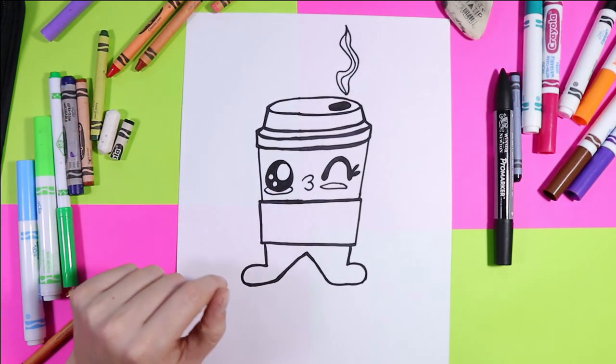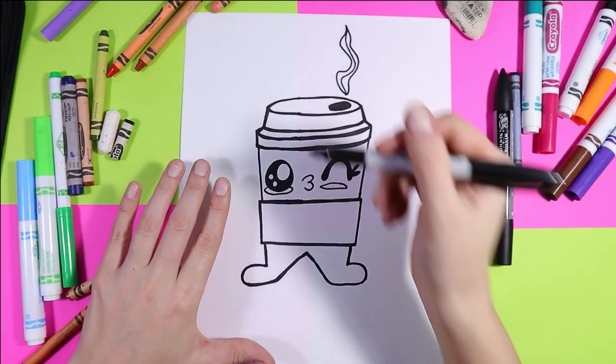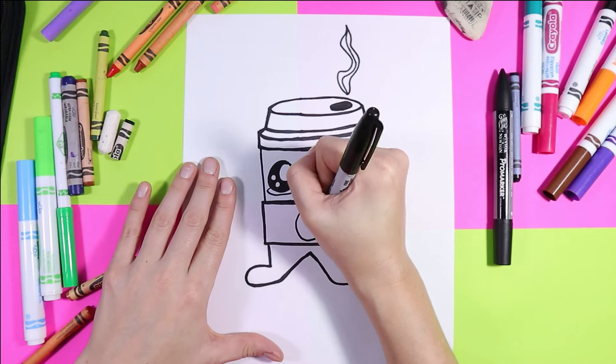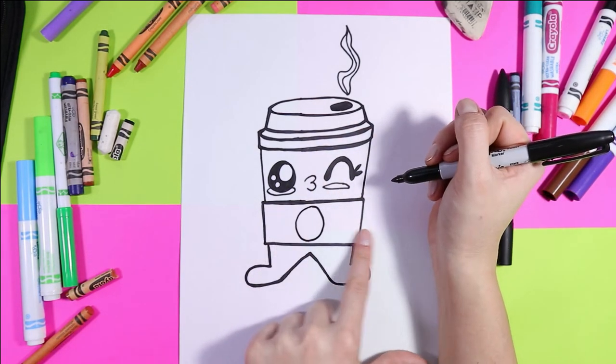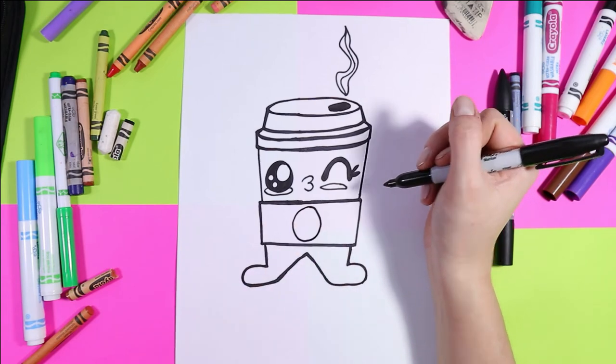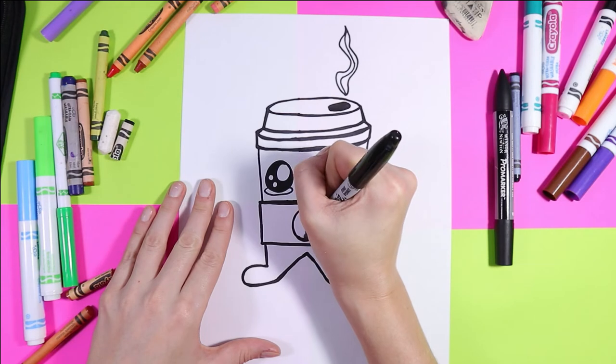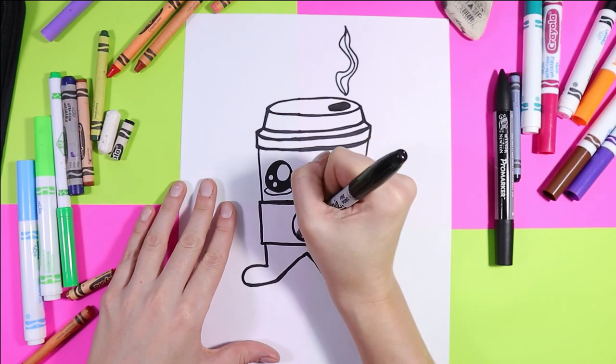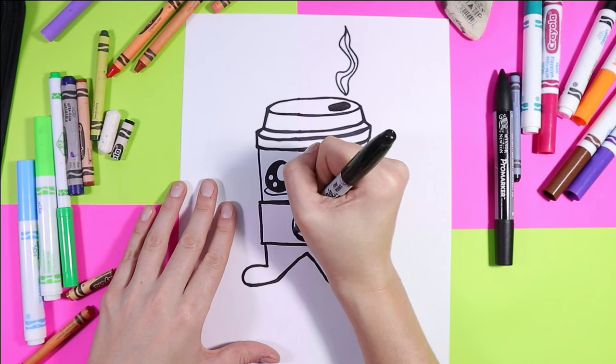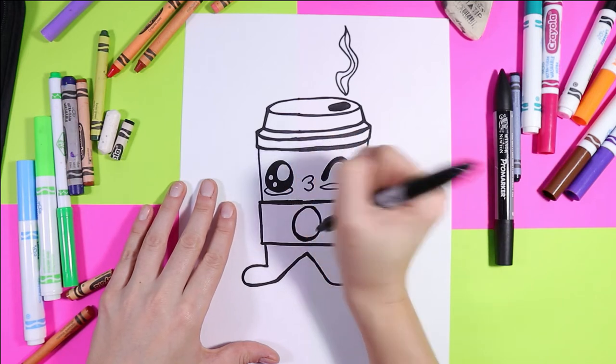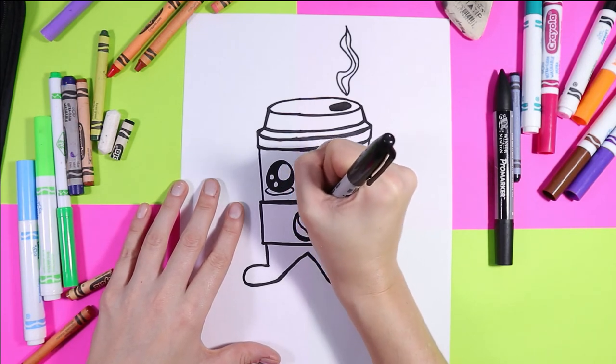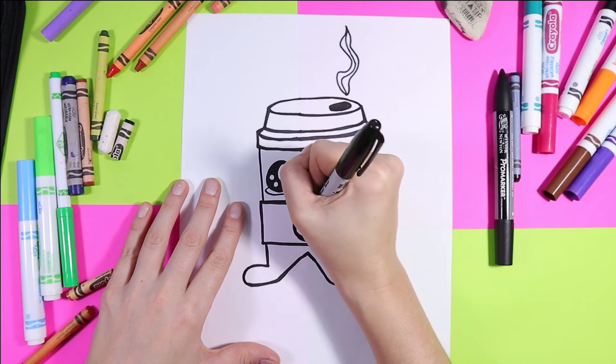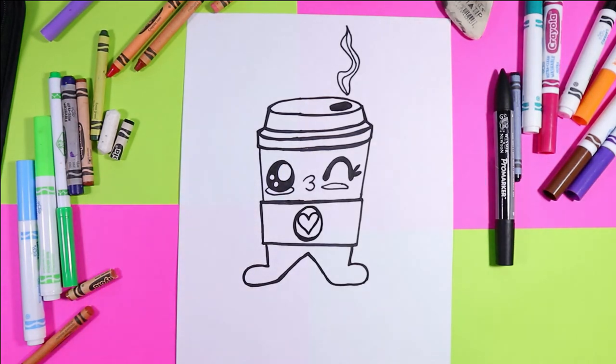Perfect. Next, we're going to add a design to the label. So if you want, you can add a design. I'm just going to color this green and leave that center white. But you can go ahead and draw a design in your label. Actually, maybe we'll put a little heart in here. Perfect. And once you're done drawing your coffee cup, you are ready to color.